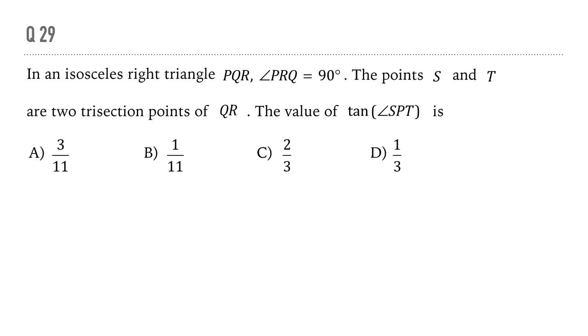Take a moment to read the question. An isosceles right triangle PQR is given to us in which angle PRQ is 90 degrees and the points S and T are the two trisection points of QR. We have to find out the value of tan of angle SPT. How do we do this question?